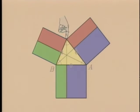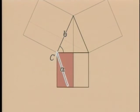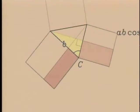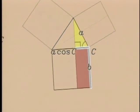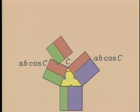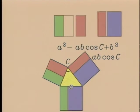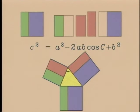Now, algebraically, the leftover areas are AB cosine C and BA cosine C. So we have A squared plus B squared minus 2AB cosine C equals C squared. The law of cosines.